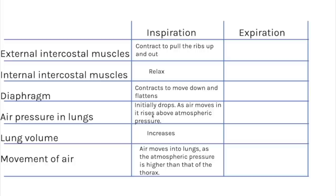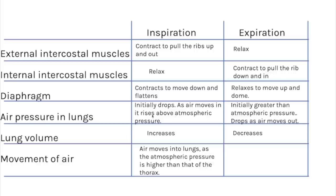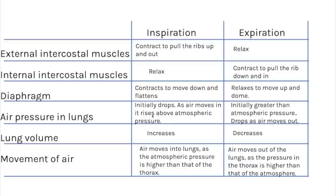When you exhale it's the opposite: the external intercostal muscles relax, the internal intercostals contract, pulling the rib cage down and inwards. The diaphragm relaxes and domes upwards, making the thoracic volume smaller. Because the space is smaller, pressure increases, and that is why air is forced out of the lungs.